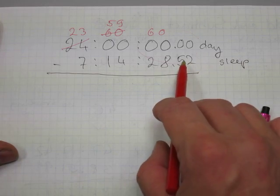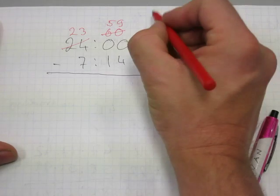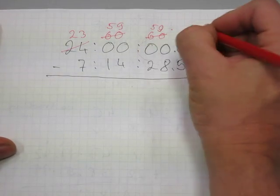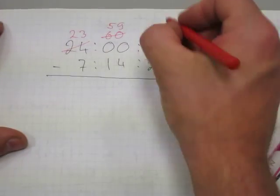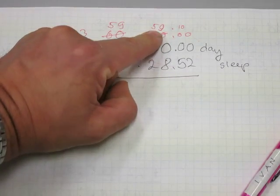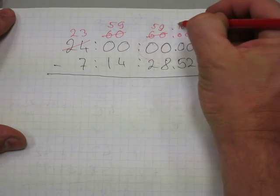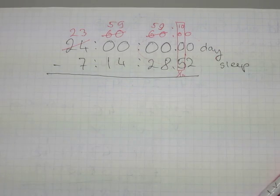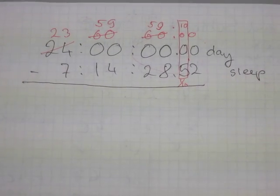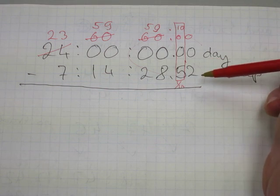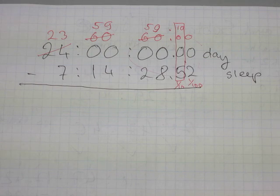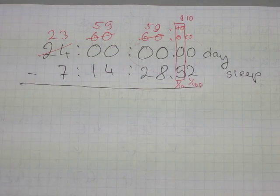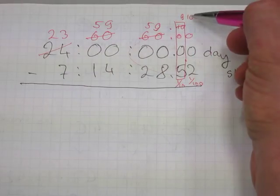The 60 seconds helps with the 28, but doesn't help with the decimal tenths and hundredths, so we take one second away — making it 59 seconds. Think of it like money: 60 dollars equals 59 dollars and 10 dimes; those 10 dimes fill the tenths column. But we still need hundredths, so we trade one dime for 10 pennies, leaving 9 dimes and 10 pennies. Now we have amounts everywhere and can subtract.